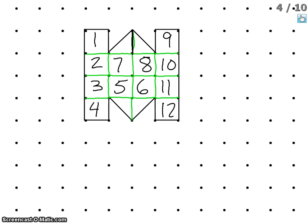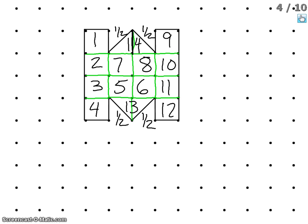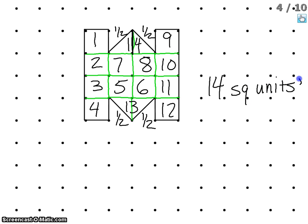Now I'm going to look at my triangles — these are both a half down here, so that's one half plus one half, which combines to equal thirteen. Then one half of a square unit plus one half of a square unit — both of these combined equal fourteen. So the total square units inside this irregular shape is fourteen square units.